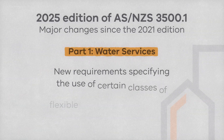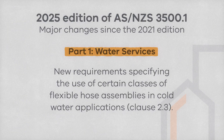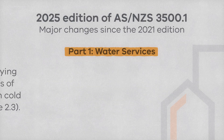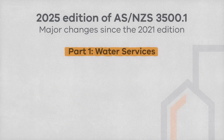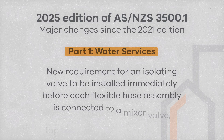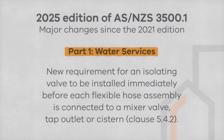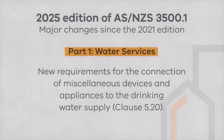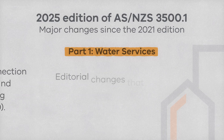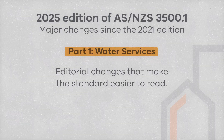There are new requirements and classes for flexible hose assemblies, minor changes in backflow prevention for AVBs or atmospheric vacuum breakers, new requirements for isolation valves when installing flexible hose assemblies connected to a mixer valve, tap outlet or a cistern, new requirements for the connection of miscellaneous devices or appliances connected to water supply, and a few editorial changes to make the standard easier to read.